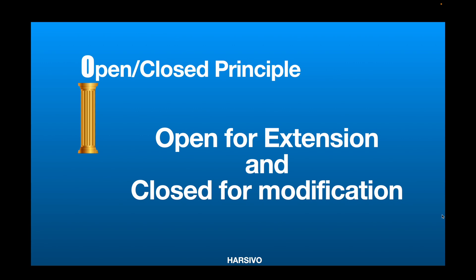In this video we are going to talk about the Open-Closed Principle. The Open-Closed Principle says that when you are creating a class it should be open for extension and closed for modification. As a developer you should not be editing existing code which is working in production, but if you want to add new functionality you should be able to add it without modifying the existing code.